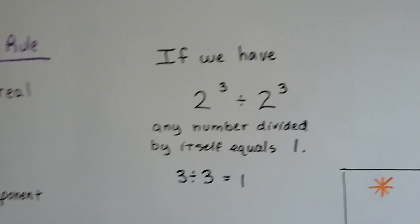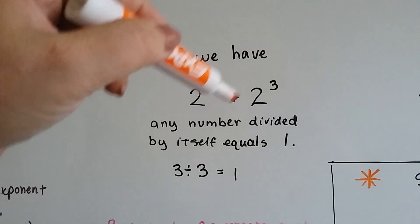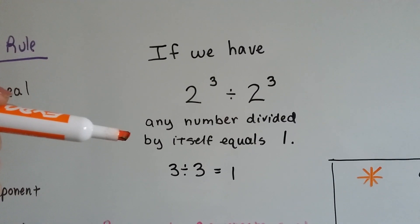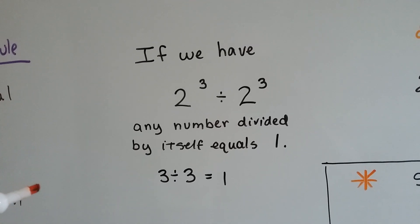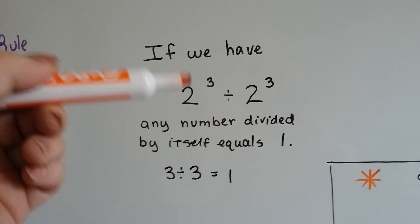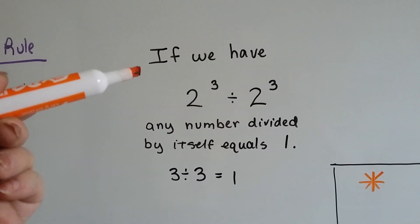If we have 2 to the third power divided by 2 to the third power, any number divided by itself is going to equal 1. 3 divided by 3 is 1, 10 divided by 10 is 1. It doesn't matter, whatever we divide by itself is going to equal 1.